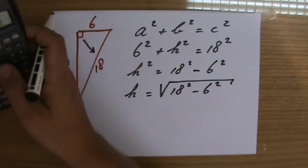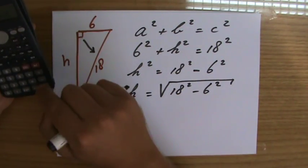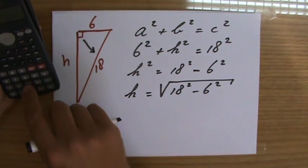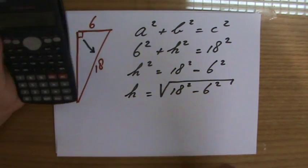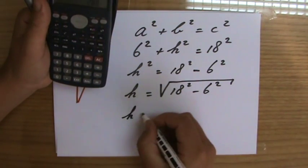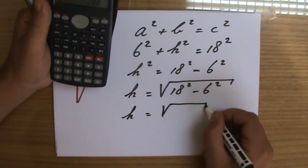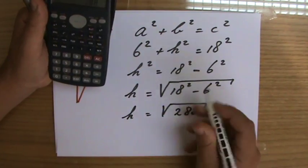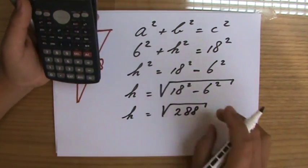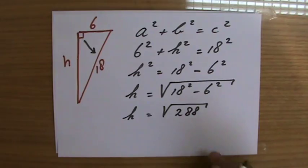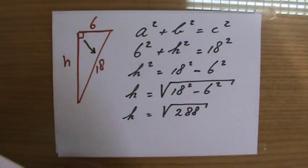Let's put it in our calculator: 18² is 324 minus 6² is 36, so that's 288. I'm not going to write down those decimals yet - we'll just say that the height is the square root of 288.